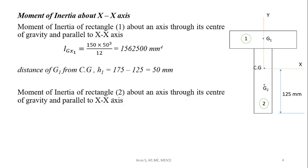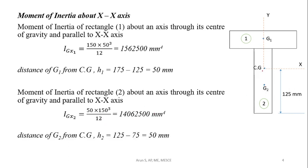Now, the moment of inertia of rectangle 2 about the axis through its centre of gravity and parallel to the X-axis is bd³/12. Here b is 15 and depth is 150, so 15 × 150³ / 12. The distance from G2 to the overall centroid CG is 75 mm, and h₂ comes out to be 50 mm.